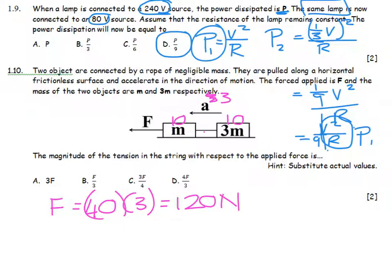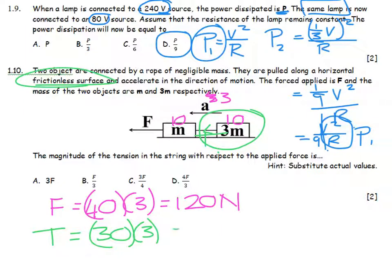Now if I take a look specifically at the tension, remember that this was a frictionless surface, so I don't have to worry about friction. The only force acting on that 3M block is the tension, so tension is equal to 30 times the acceleration of the system, 90 newtons. So the magnitude of the tension with respect to the applied force is this number over here is 3 quarters of 120, so it is 3 quarters of the original force.